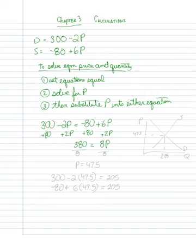Then I'm going to divide each side by 8, so that I am basically stuck with P equaling 47.5. Now that right there is my equilibrium price.